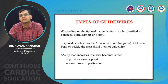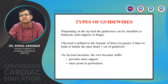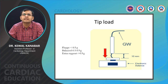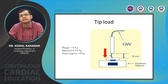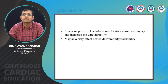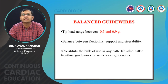Tip load is the force required to buckle the distal 1 cm of the wire. The least stiff wires are the BMW wires; the stiffest are the Miracle 12 and Confianza wires. As tip load increases, support increases but so does the risk of distal vessel perforation. Floppy wires have less than 0.5 gram tip load; balanced wires are between 0.5 to 1 gram; extra support wires exceed 1 gram. Low tip load reduces friction, reduces vascular injury, and improves durability, but may offer less support and cannot cross CTOs.